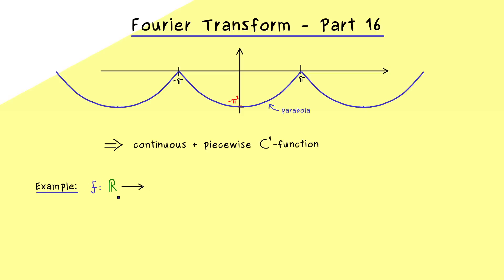First let's fix all the definitions. We start with the definition of the function f — our 2π-periodic function sketched above — which means we have to give a definition inside the interval minus π to π. The equation of this parabola is simply f(x) = x² − π². It's clearly a parabola with the correct zeros at minus π and π and the minimum minus π² at the origin.